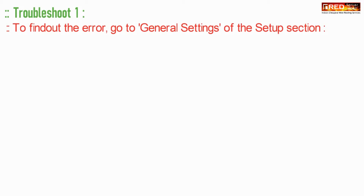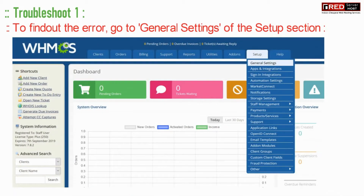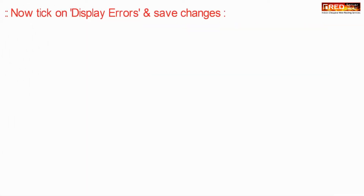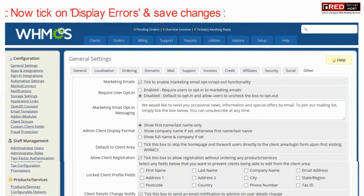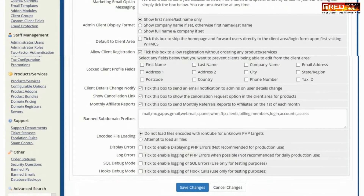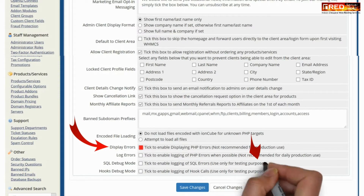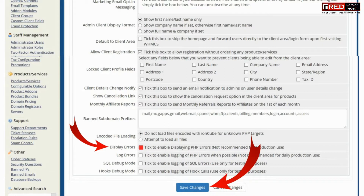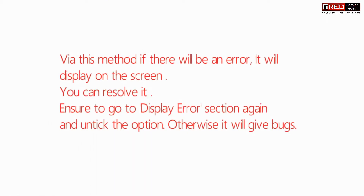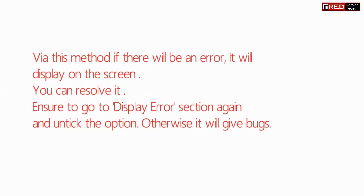Troubleshoot number one would be to find out the error from error logs. For that, go to General Settings of the Setup section, then tick on 'Display Errors' and save changes. Via this method, if there is an error it will display on the screen itself, and you can further resolve it.